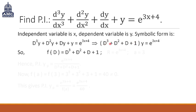So D³ + D² + D + 1 is our f(D). R is e^(3x+4), which is there on the right hand side, and a is equal to 3.